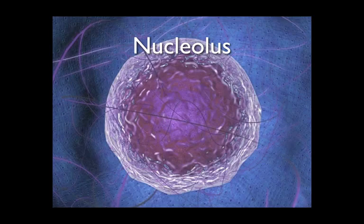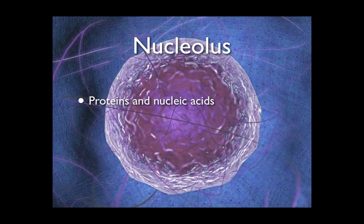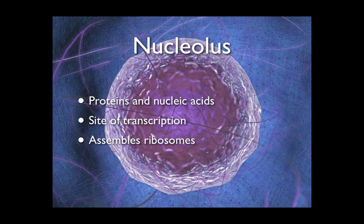The nucleolus is made of densely packed proteins and nucleic acids. It is located in the center of the nucleus and is the site of transcription of DNA onto the mRNA. This mRNA leaves the nucleus to join with ribosomes and create proteins. These ribosomes are made inside the nucleolus.